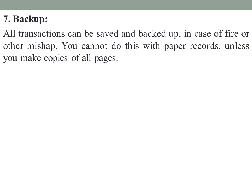In computerized accounting, you can save all transactions with a proper backup. You can't do this with paper records unless you make copies of all pages. In manual accounting, in case of a natural calamity, the paper records could be lost. But in computerized accounting, data can be saved on a hard disk or pen drive for backup and storage.